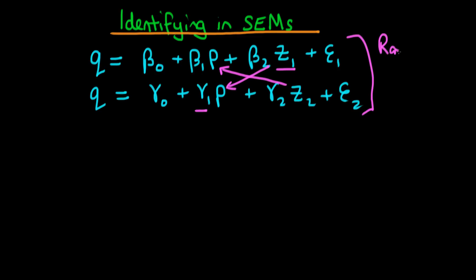The condition which is met in this circumstance is known as the rank condition. The rank condition is the condition under which we can estimate all the parameters in our model. In a general equation framework, for each particular equation, there must be at least as many exogenous variables not included in that equation — which can act as IVs — as there are endogenous variables in that equation. We'll go through an example to make this clearer.